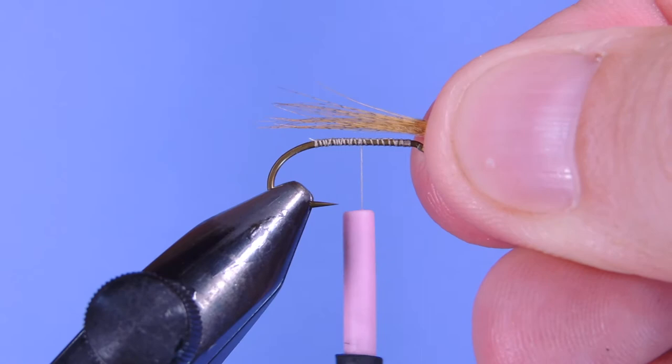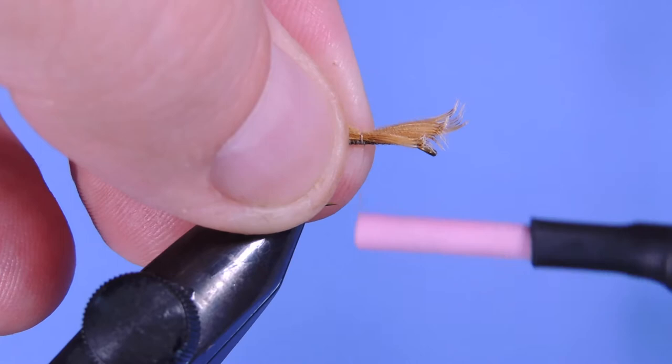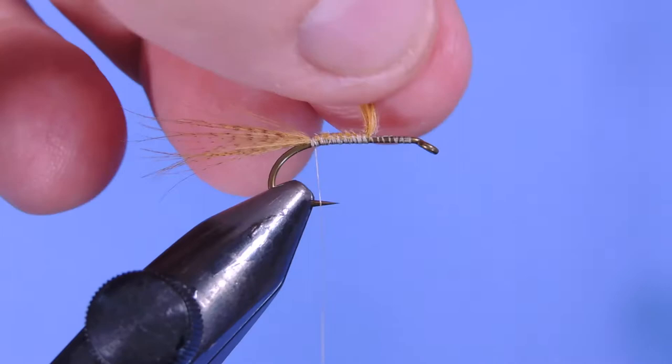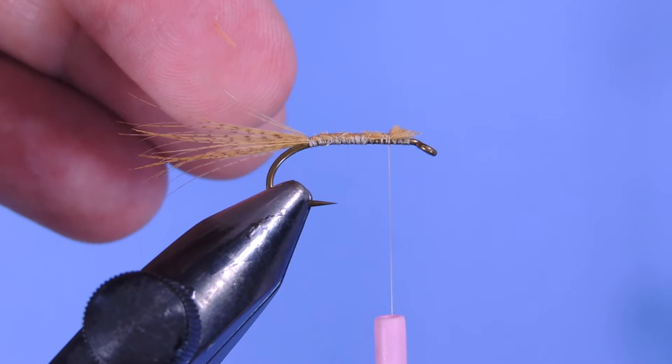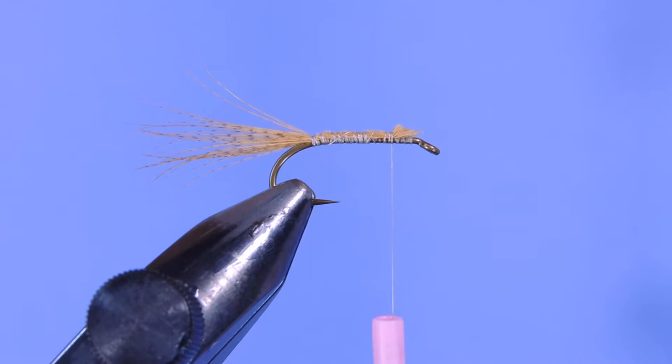So we'll measure that about a hook length, maybe a touch longer. It doesn't hurt. Come back up to the front, trim that off. You can tie this in as a single feather if you've got a really long flank feather.